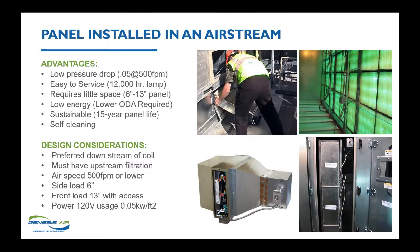Design considerations: we want to put this downstream of a coil when we can, so we keep the leaving air clean off the evaporator coil, but it can go upstream. You can replace filter sections with this panel and a filter — it must have upstream filtration. You do not want the panel to become a filter because when it gets dirty, there's no more energy transfer and we can't create the hydroxyl radical. Side-load requires 6 inches, front-load 13 with door access. Power is 0.05 kW per square foot of airstream — very user-friendly.